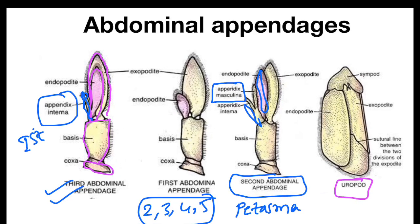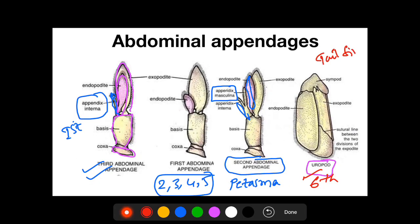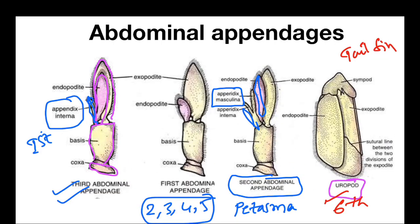Uropods are the sixth pair of abdominal appendages. They are very large and lie on either side of the telson. Together with the telson, they form the tail fin. The telson is the outgrowth of the last abdominal segment.